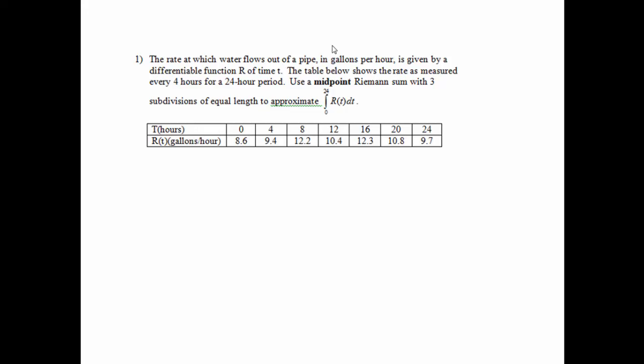Well, first of all, I'm going to deal with my units. We know the rate is in gallons per hour, and it's asking us to take the integral, so I know that when we take the integral, the rate is going to drop out, so my final answer is going to be gallons. It's going to tell me how much water has flown out of the pipe.